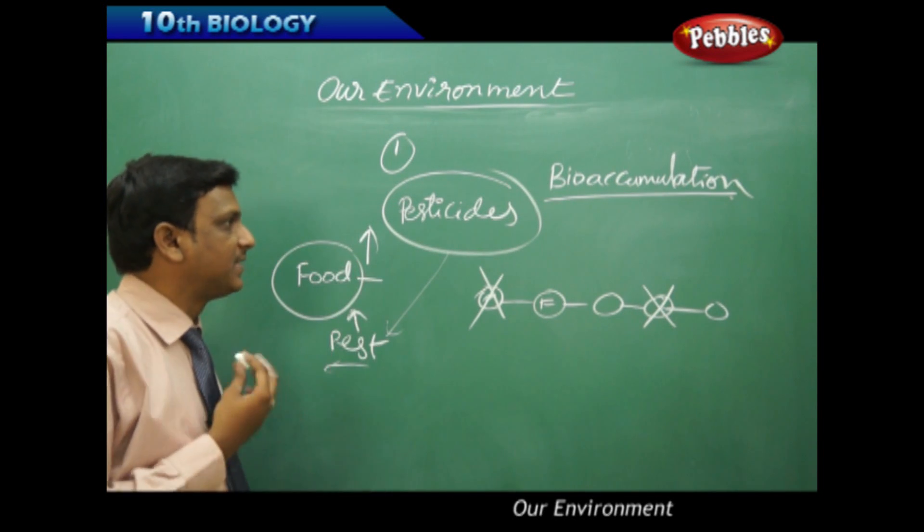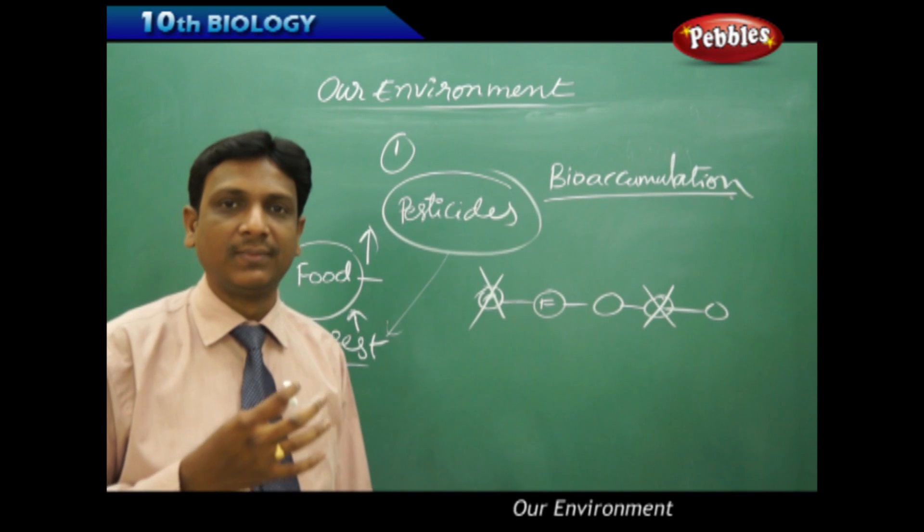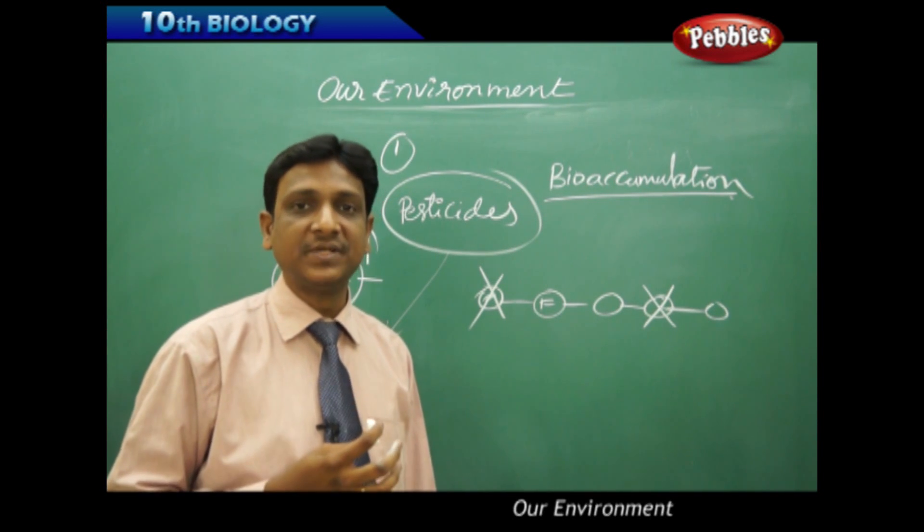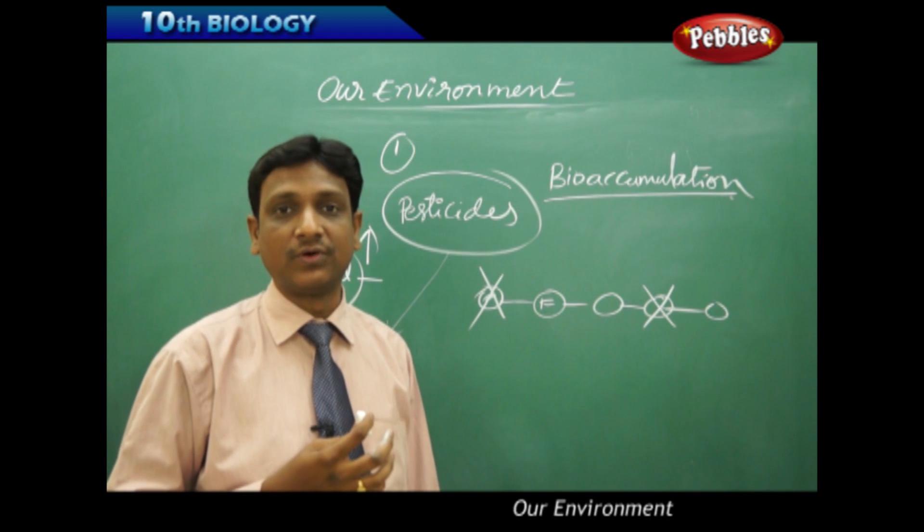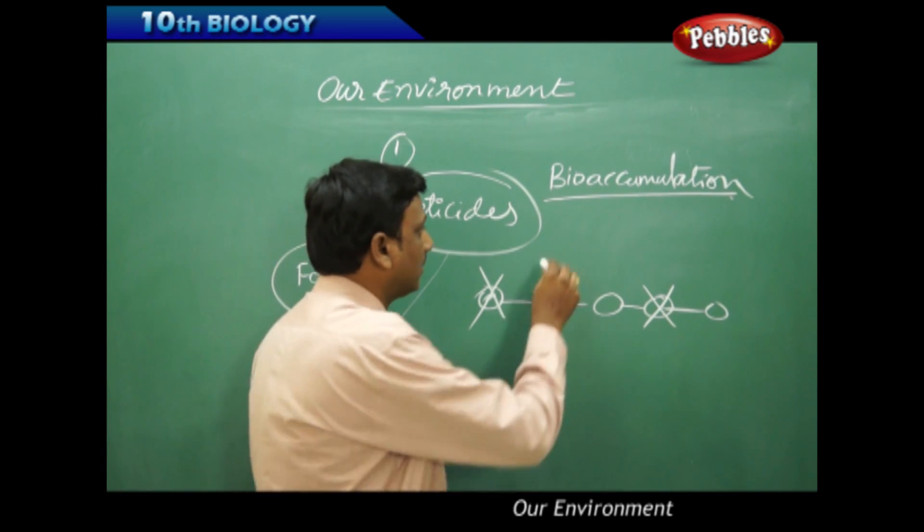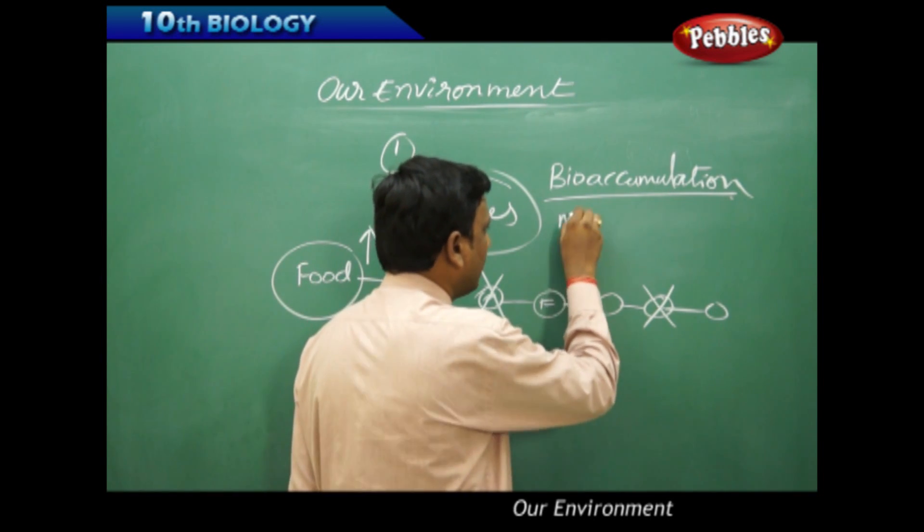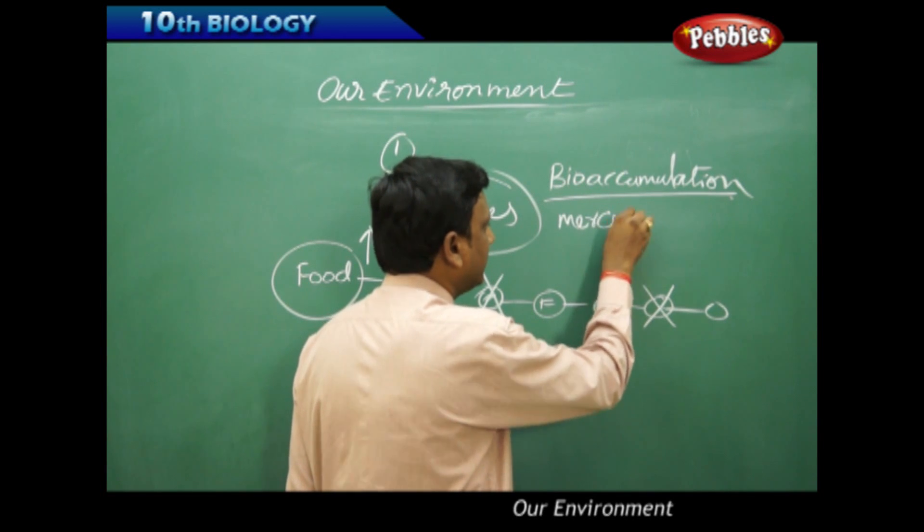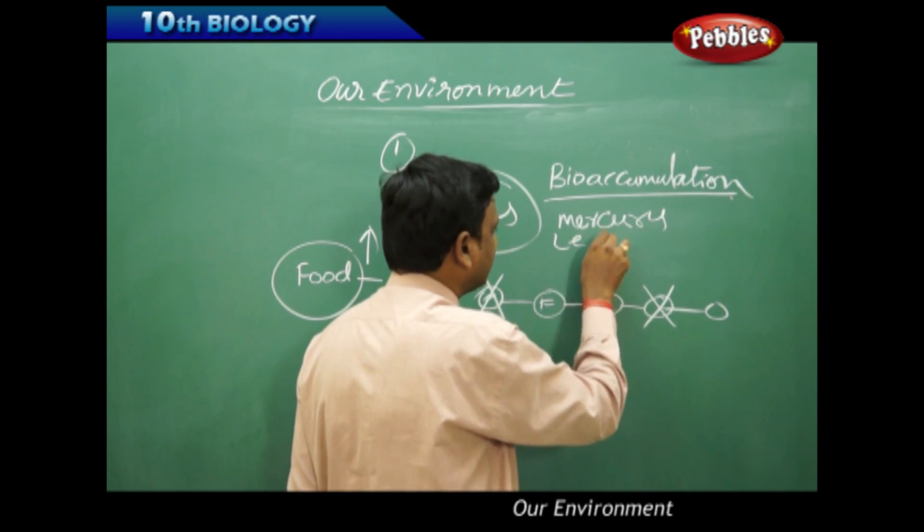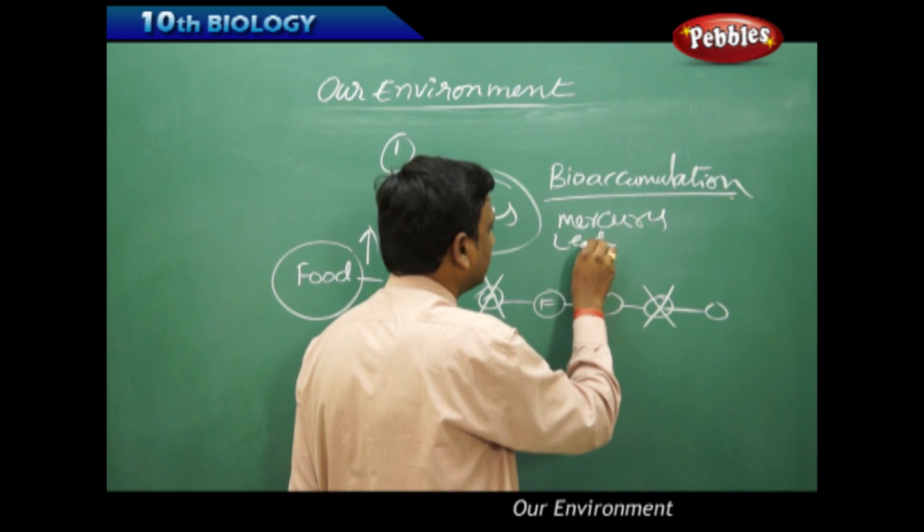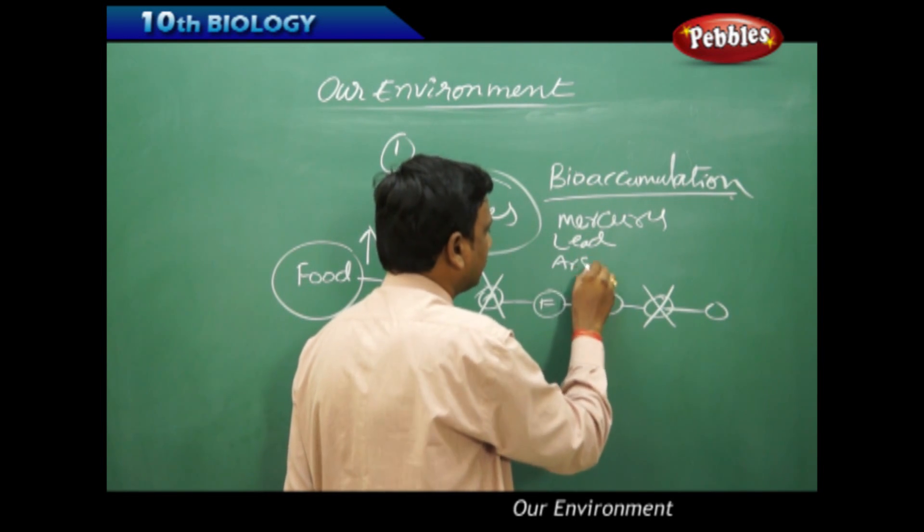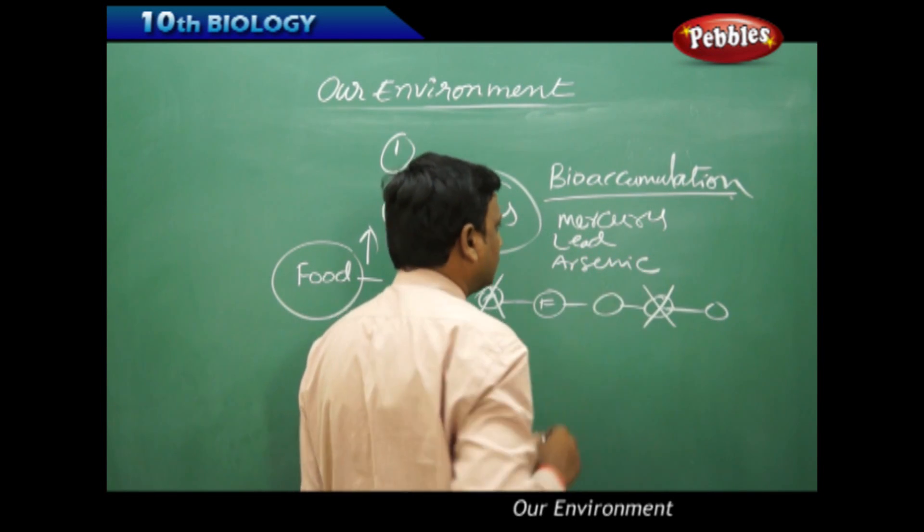Among these pesticides, certain pesticides degrade over time, but certain pesticides continue in the bodies of organisms for a very long time. Most importantly, mercury poisoning is very dangerous, along with lead poisoning and arsenic.